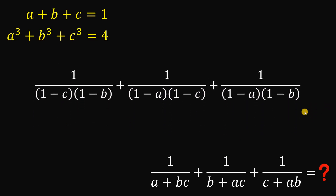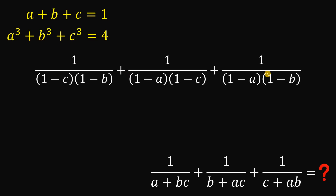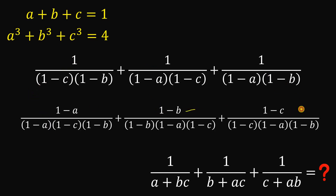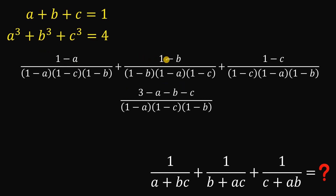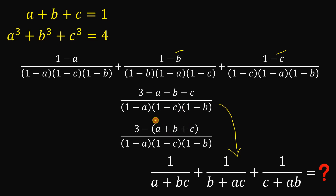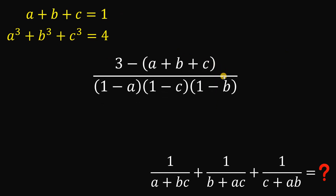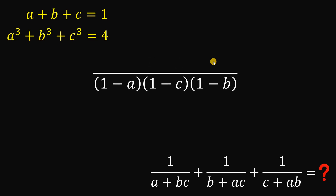Now, let's focus on this result and combine these three fractions. To get a common denominator, we multiply the first fraction by (1 minus A), the second by (1 minus B), and the third by (1 minus C), making all denominators the same. Combining the numerators gives us 1 plus 1 plus 1 minus A minus B minus C, which is 3 minus (A plus B plus C). Since A plus B plus C equals 1, this becomes 3 minus 1, which equals 2.